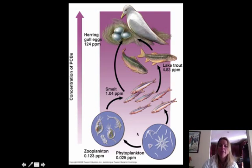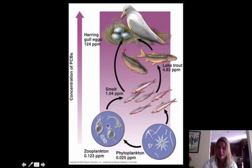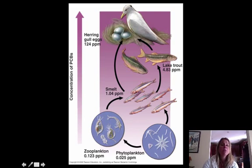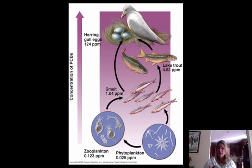But now a fish comes along and eats not just one of those organisms, but a bunch of them. So the amount of mercury in the fish's tissues goes up because it's eaten so many organisms that had mercury in them. Then another fish comes along and eats a ton of those, and so on. When you get to the top of the food chain, those organisms are going to have super high amounts of different chemicals.